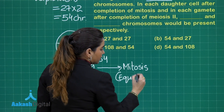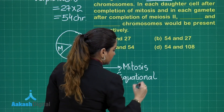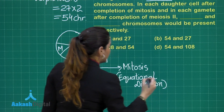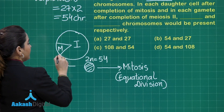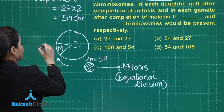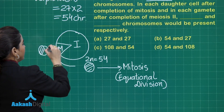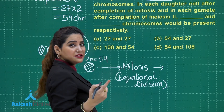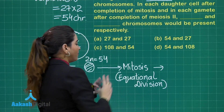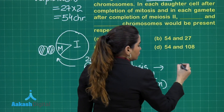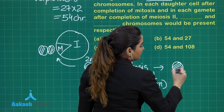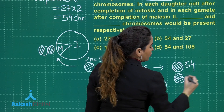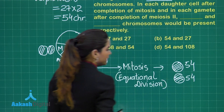After mitosis, when two daughter cells are formed, the number of chromosomes still remains the same. So both daughter cells formed will again have 54 chromosomes each — still in the 2N diploid state.